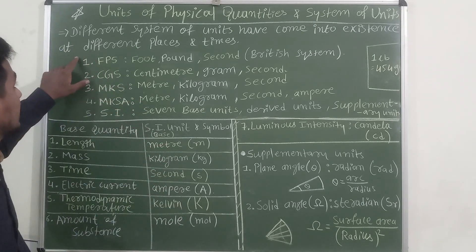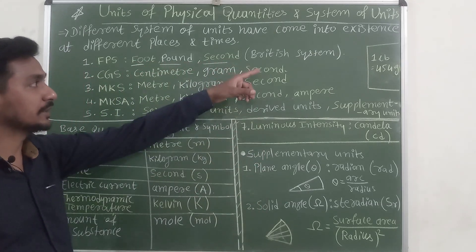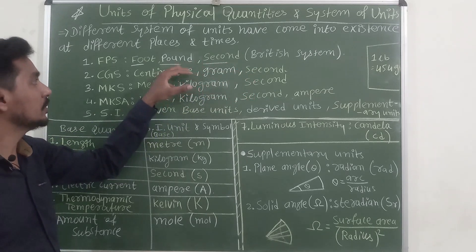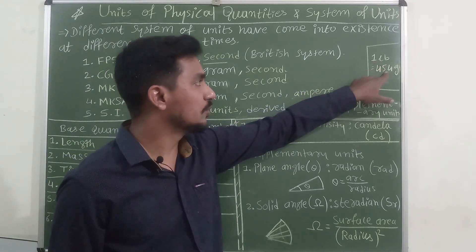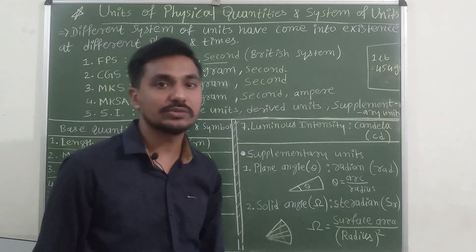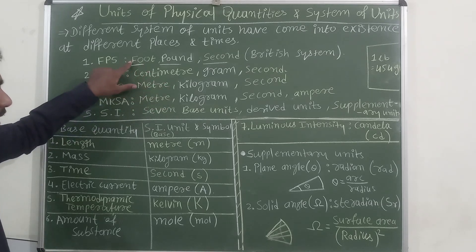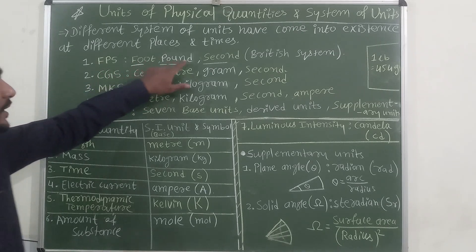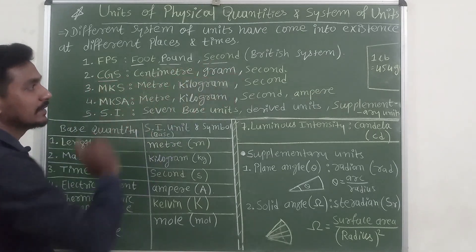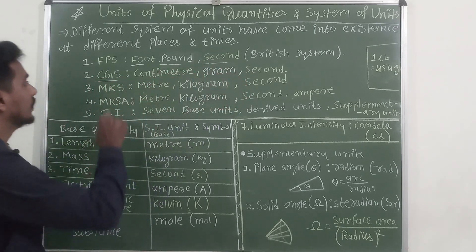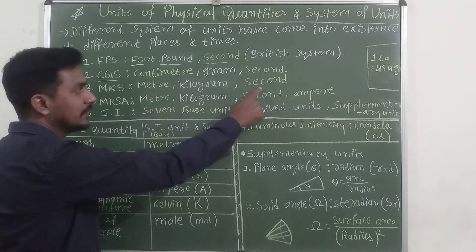Different systems of units have come into existence at different places and times. The first is FPS — Foot, Pound, and Second — which is a British unit. One pound (LB) is equal to 454 grams, or 0.454 kilograms. Then CGS: centimeter, gram, and second for length, mass, and time. Then MKS: meter, kilogram, and second.